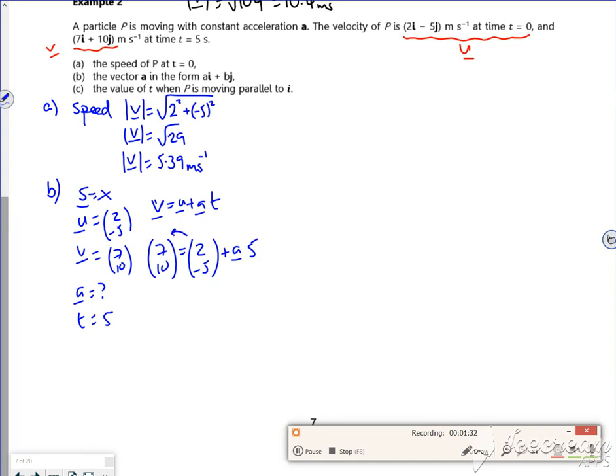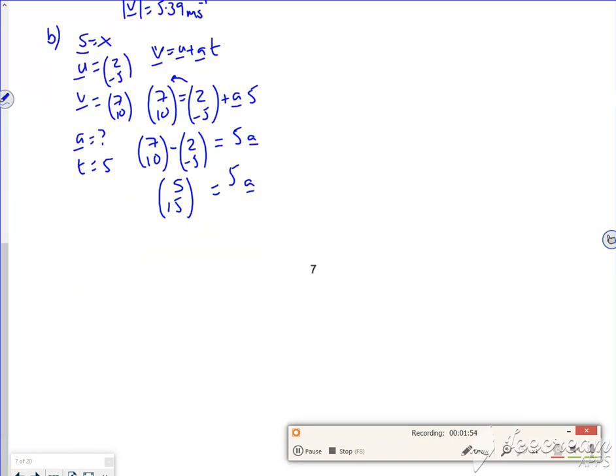Now I'm going to take that over, so I've got 7, 10 minus 2, minus 5, so that's going to be 7 take 2 is 5, 10 minus a minus 5 is 15, that's equal to 5 lots of acceleration, and then if I divide by 5, I've got 1 and 3 for my acceleration.